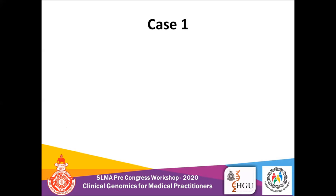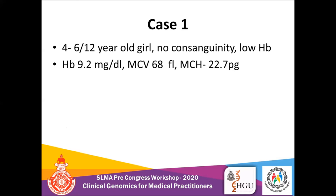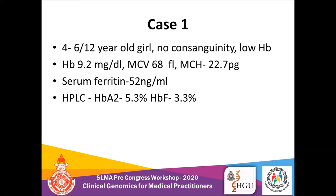I will discuss two simple cases. The first one is a four and a half year old girl presented with low haemoglobin, born to non-consanguineous parents. Haematological studies show low haemoglobin and hypochromic microcytic anaemia. Serum ferritin was within normal range, and quantification of haemoglobin revealed an increased amount of HbA2, the second adult type haemoglobin. Usually it falls below 3.5, and if it is above 3.5 it is significant.